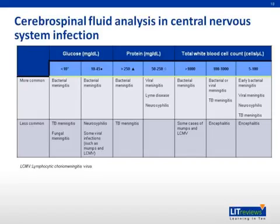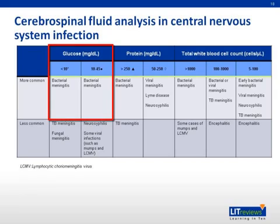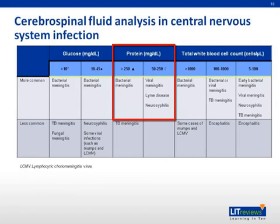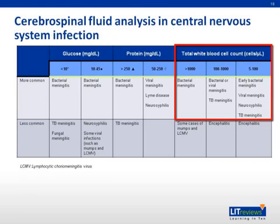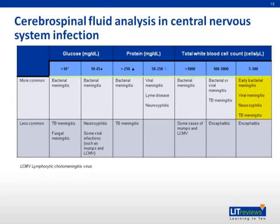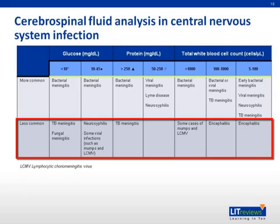This slide depicts the differential for abnormal CSF findings. For bacterial meningitis, you'll often see a glucose less than 10 or 10 to 45, an elevated protein greater than 250, and a white blood cell count greater than 1,000 — most suggestive of bacterial meningitis. A white blood cell count of 100 to 1,000 can also suggest it, but if it's less than that, think of other things such as aseptic meningitis, TB meningitis, or early bacterial meningitis. The bottom of the table shows other causes of abnormal CSF findings on the differential, which won't be discussed here.